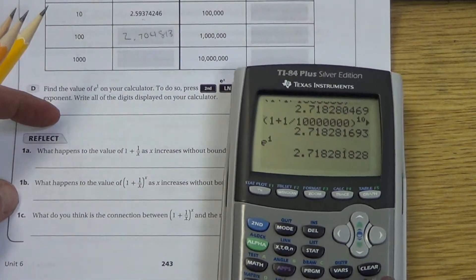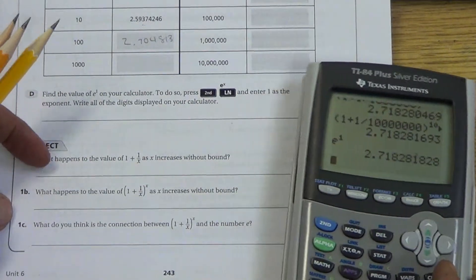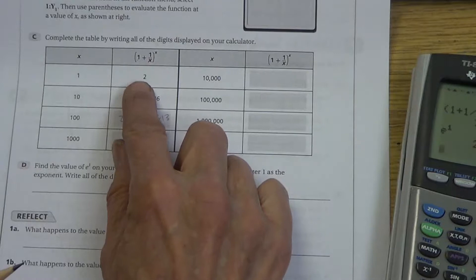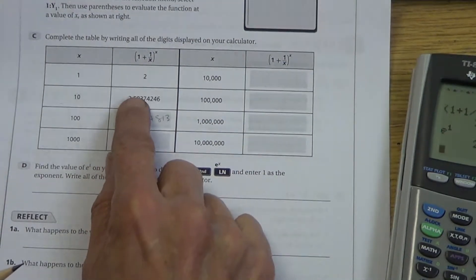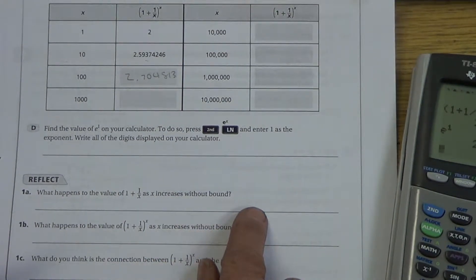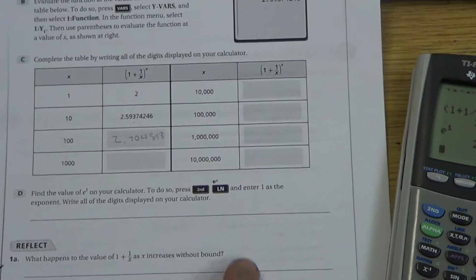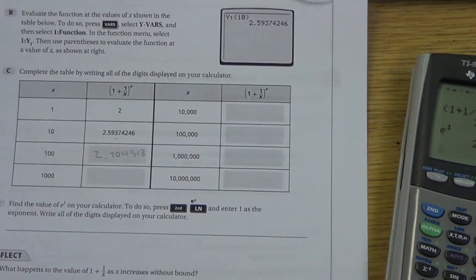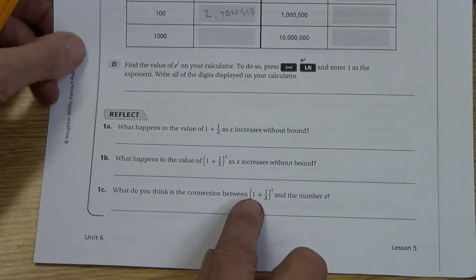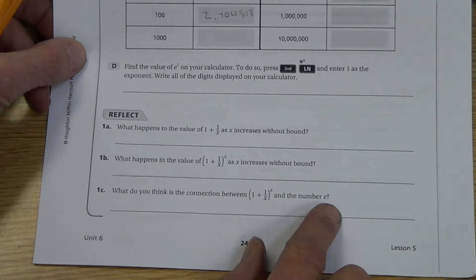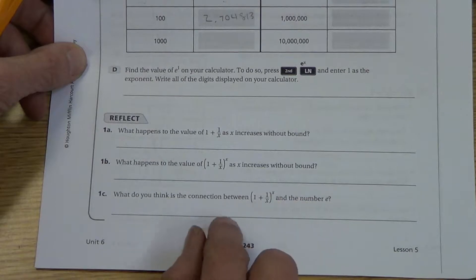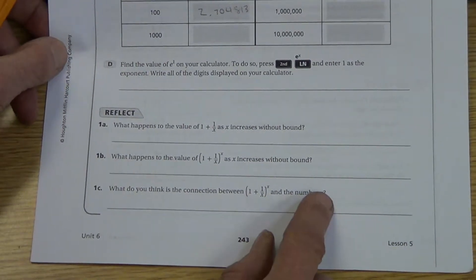So, question is, what happens to the value of 1 plus 1 over X as X increases without bound? So as it increased without bound, it became 1 plus 1 half, it was 1 and a half. 1 plus 1 tenth was 1 and a tenth. 1 plus 1 over a hundredth was 1 and a hundredth. This was before we raised it. So it's getting ever so close to 1. What happens to the value when we raised it to the power? Look up here and tell me what the trend is. What's it getting closer and closer to without bound? What do you think the connection is between 1 plus 1 over X raised to the X and the number E? As the X increases without bound, the value of these comes closer and closer to what? And I hope that you're seeing that it's that value of E.